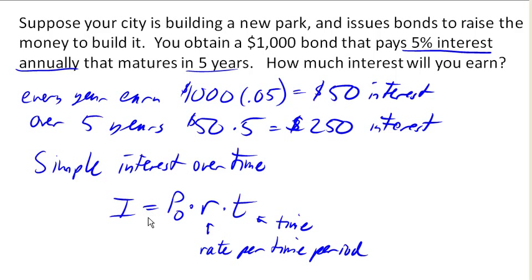Notice that we've already done that here, but using this formula, my starting amount is $1,000, my interest rate is 5%, my time is 5 years. Notice this is interest per year, this is years, so they match in time intervals. And if we multiply that out, we get our $250 in interest.